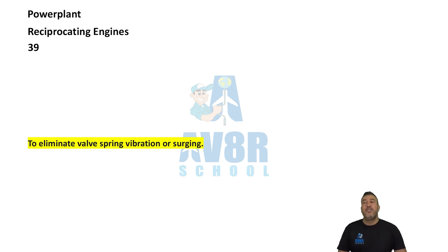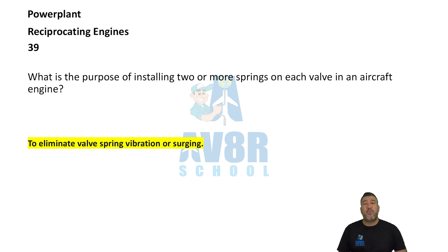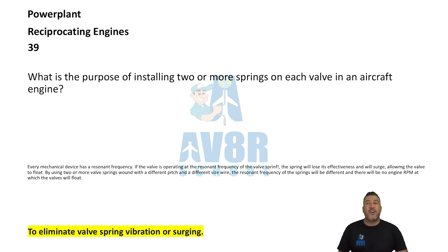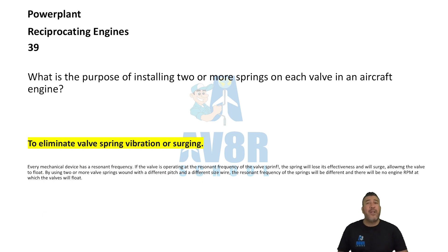Number 39. What is the purpose of installing two or more springs on each valve in an aircraft engine? To eliminate valve spring vibration or surging.